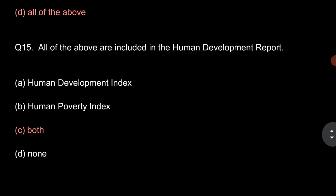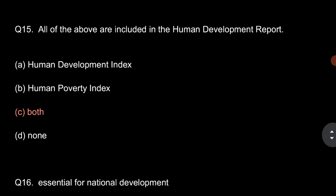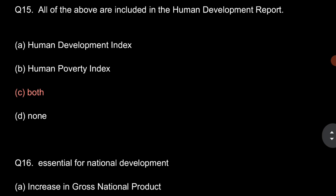Question number 15: All of the above are included in the human development report. So, human development report includes human development index and human poverty index. So, option C is correct, that is both.